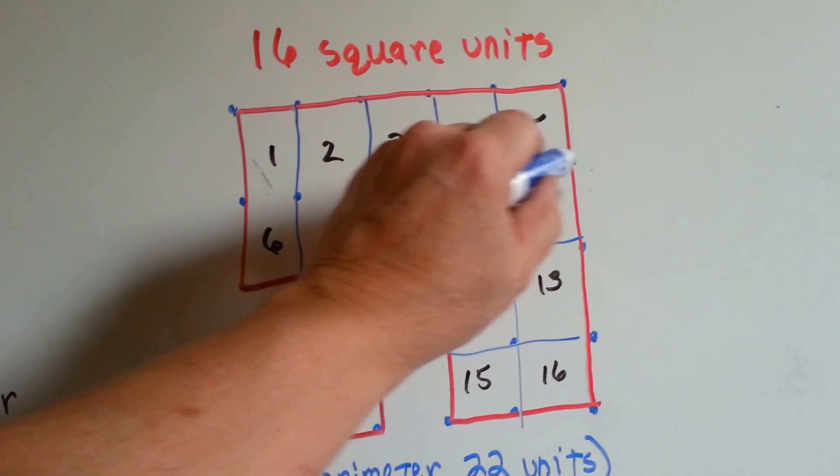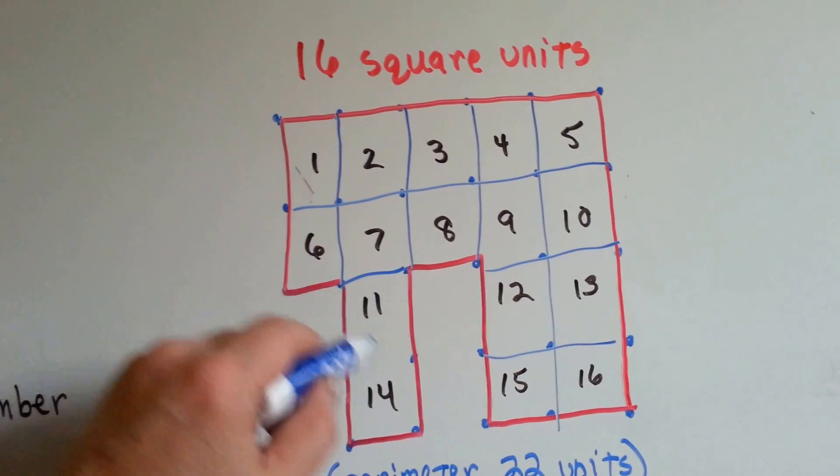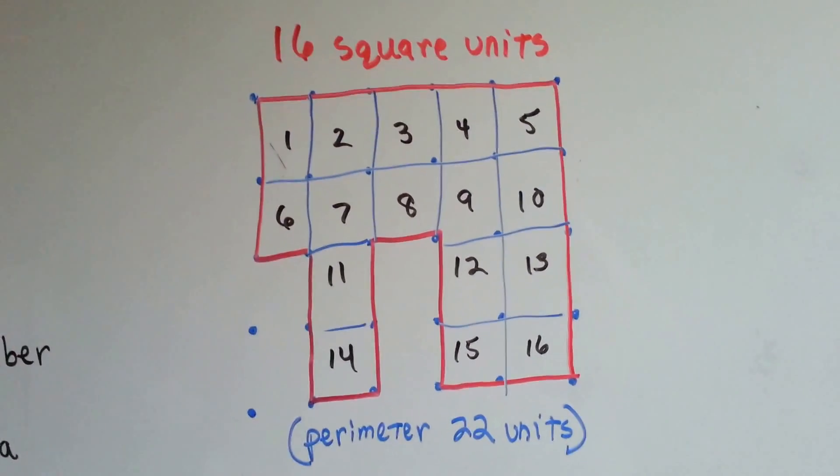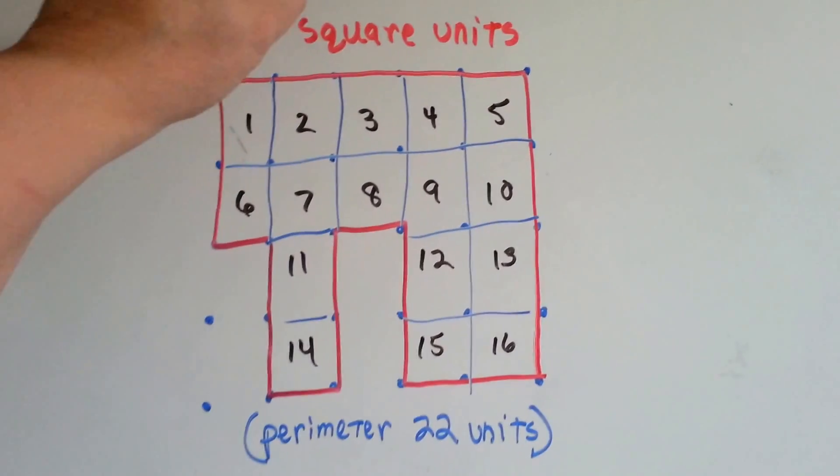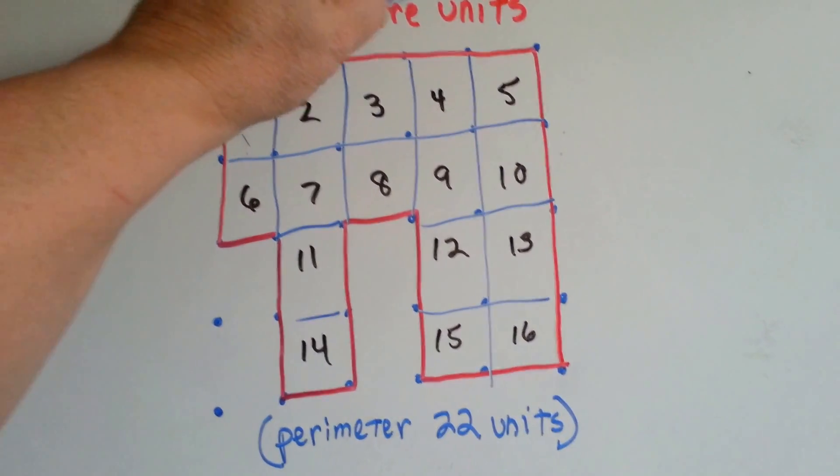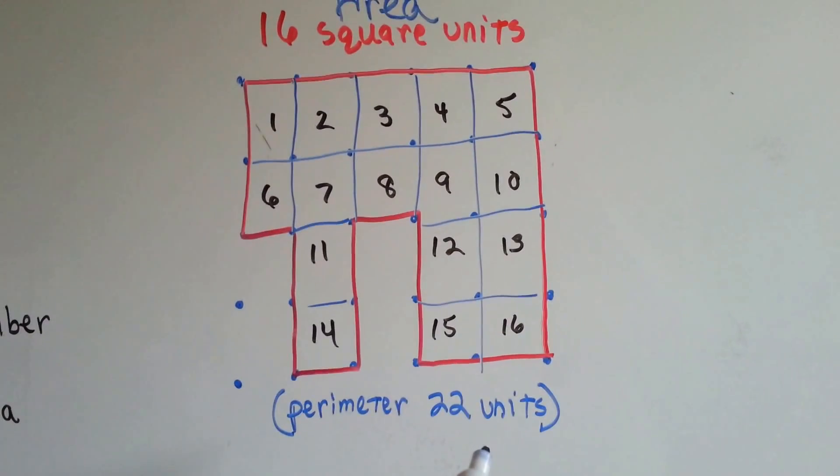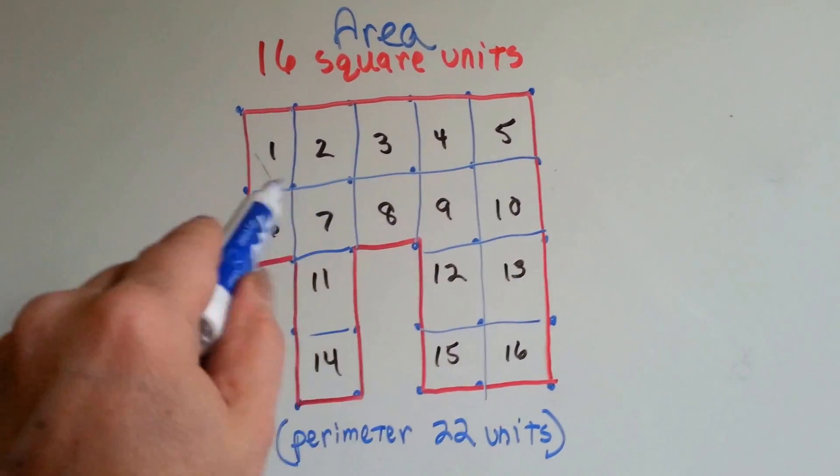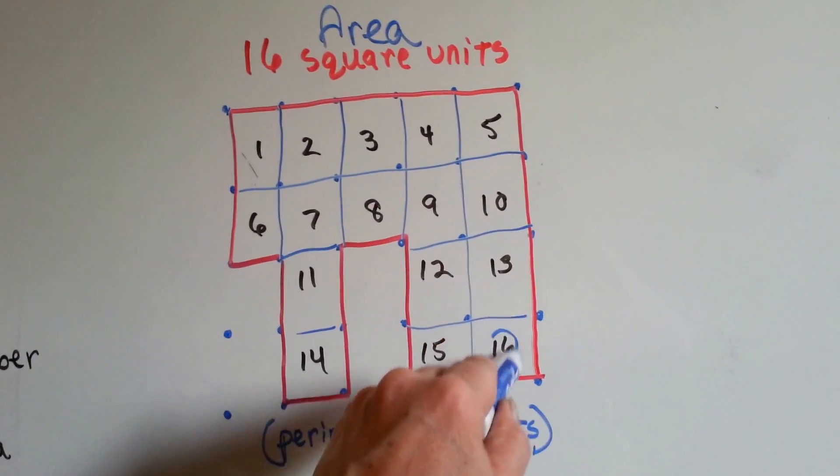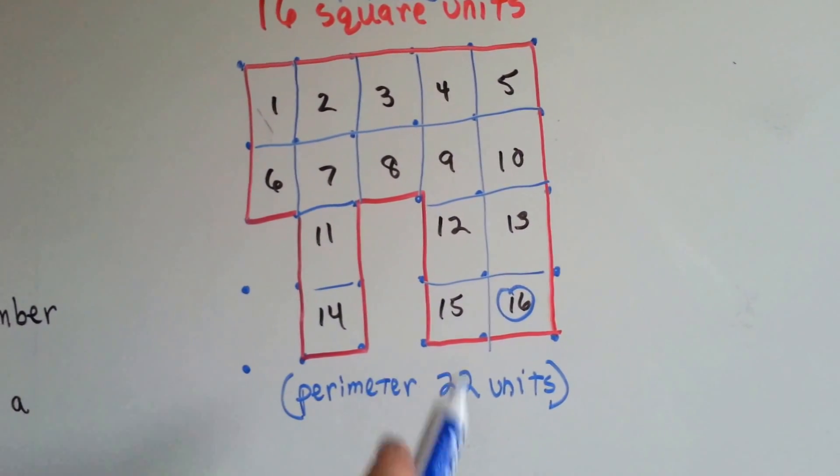And if we draw in the lines again and connect the dots, you'll see the square units. See them? So there's sixteen square units here for the area. But the perimeter is twenty-two units. So the area on the inside is sixteen, but the perimeter is twenty-two.